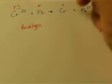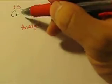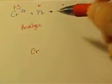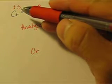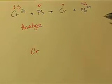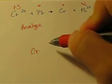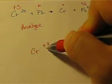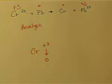What do we analyze? We analyze for the element. Let's look at chromium. For chromium, from the reactant side, the oxidation number is plus three. On the right, it is zero. So it is going down from positive three to zero.